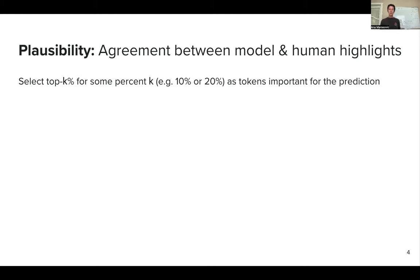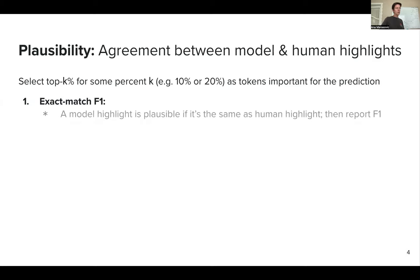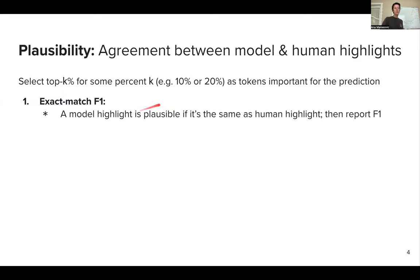Once you've done that, you can just color the words that survived the importance selection and not color those that didn't. Then we can compute an exact match F1 score with human-annotated highlights. We'll have evaluation dataset annotations where actual people said these are the important phrases for the model to predict a given label. We can check whether our highlights match the human highlights exactly — assigning one if they fully match and zero otherwise — and then compute the F1 score as if it were a classification task.